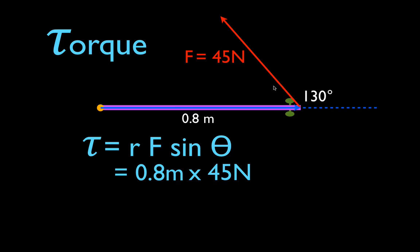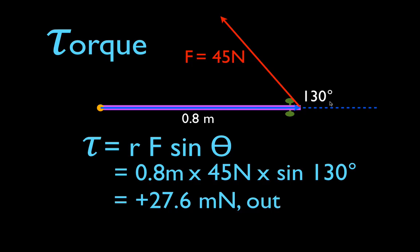This angle is theta — not this other angle. The sine of 130: when you multiply 0.8 times 45 times the sine of 130, you get 27.6 meter-newtons. That's the magnitude of the torque. Torque has magnitude and direction. When we apply this force, it would cause the door to rotate in the counterclockwise direction — that's why there's a plus sign here. Forces that cause objects to rotate counterclockwise produce what we define as positive torque. This is the direction of the torque vector.